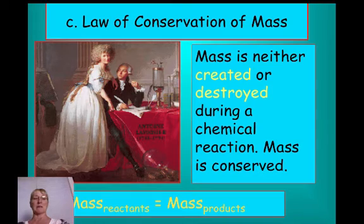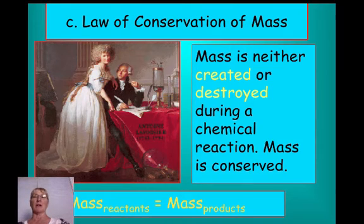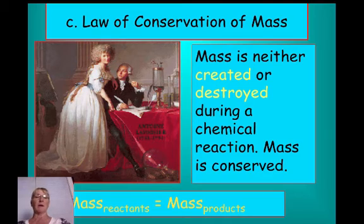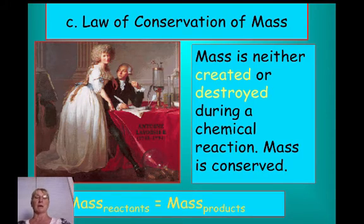Expressed in mathematical form: mass of products equals mass of reactants. Whatever number and kinds of atoms you begin with on the left-hand side of an equation, you have to end up with that same number and kinds of atoms on the right. They might be rearranged into new substances, but they're all still there — as Lavoisier's tightly controlled experimental apparatus demonstrated.